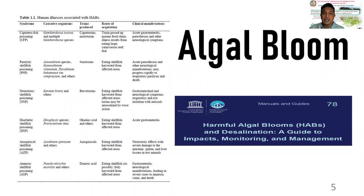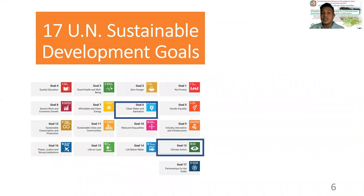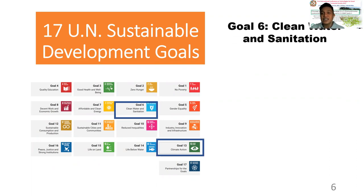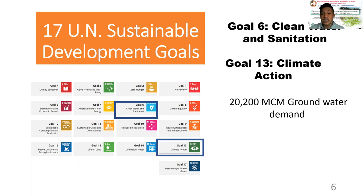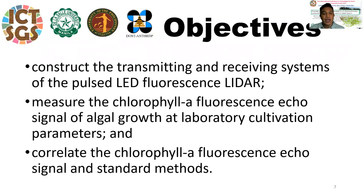Algal blooms cause illnesses associated with harmful algal blooms. Two of the 17 United Nations Sustainable Development Goals were targeted: first, clean water and sanitation — in the Philippines, about 20,200 MCM of groundwater is in demand — and due to changing climate, we also targeted Goal 13, which is climate action. The objectives of the study are to construct the transmitting and receiving systems of the Pulse LED LiDAR system and to measure the chlorophyll A fluorescence echo signal of algal growth at laboratory cultivation parameters.